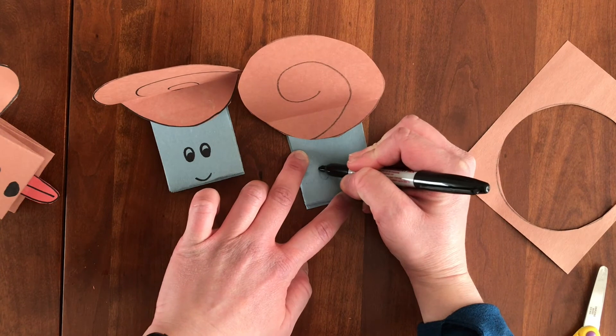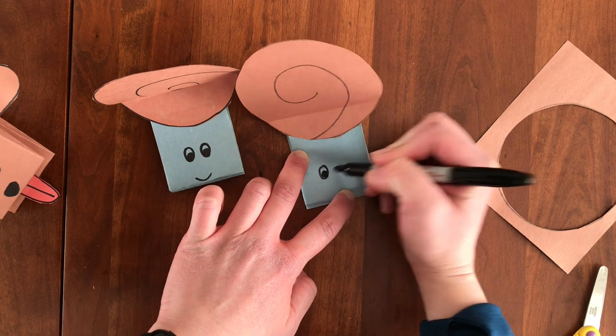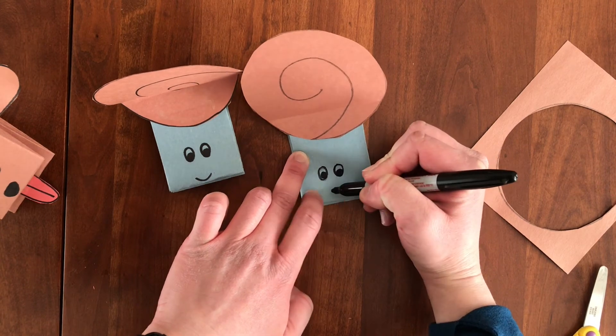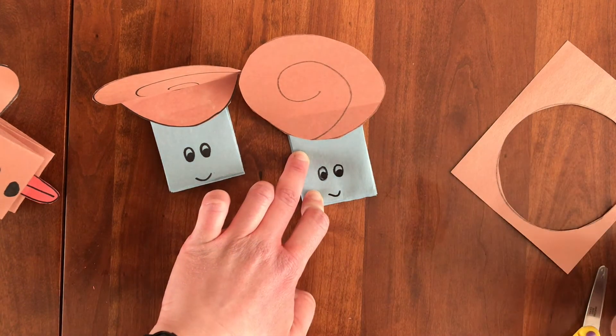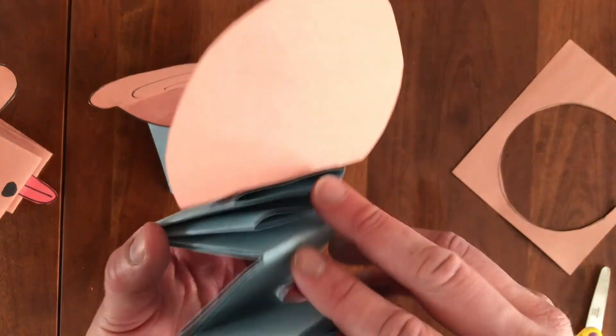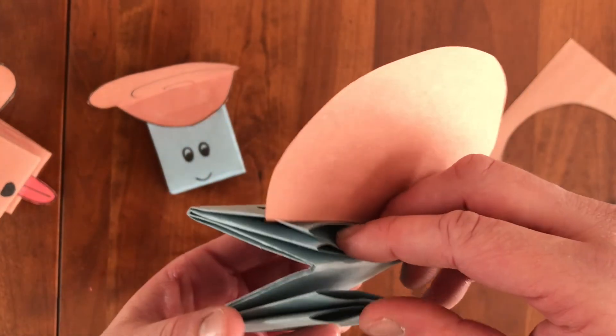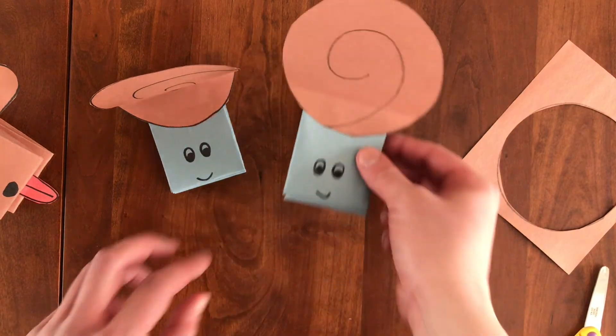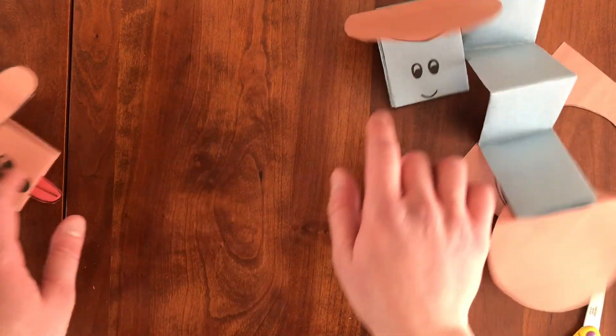So one eye, the other eye, and a little smile. So there's my snail. And I have the pockets in the back. Put my fingers in. And I can make him talk. So there you have it. You've got snail and puppy puppets for you to practice at home with.